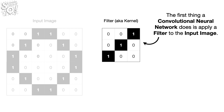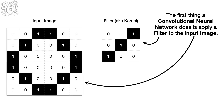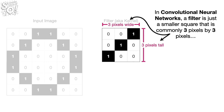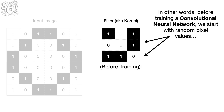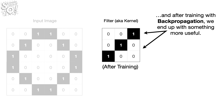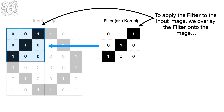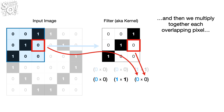The first thing a convolutional neural network does is apply a filter to the input image. In convolutional neural networks, a filter is just a smaller square that is commonly three pixels by three pixels. The intensity of each pixel in the filter is determined by backpropagation — before training we start with random pixel values, and after training with backpropagation we end up with something more useful. To apply the filter to the input image, we overlay the filter onto the image and then multiply together each overlapping pixel.